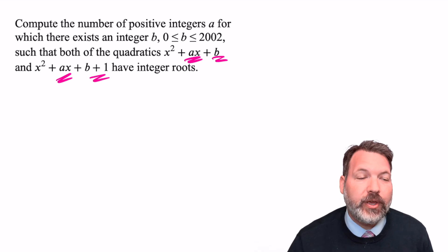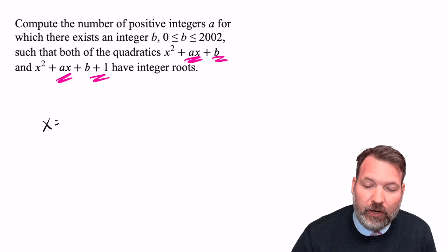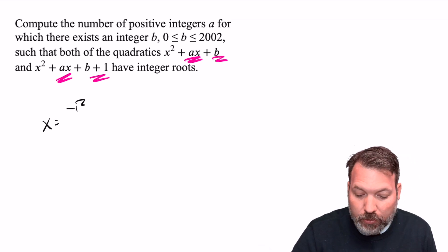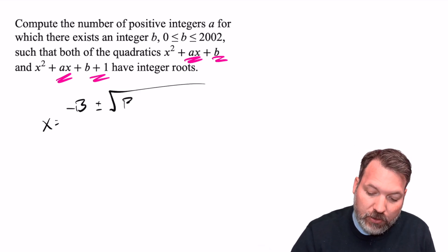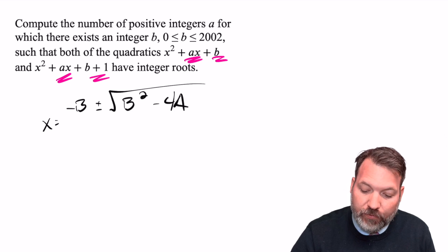If we needed to, though, we could investigate this situation with the quadratic formula, right? x is equal to negative b plus or minus the square root of b² - 4ac all over 2a.